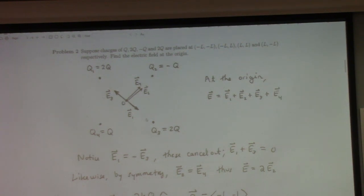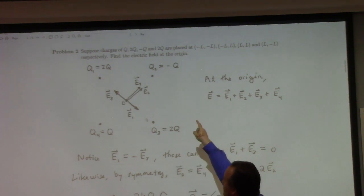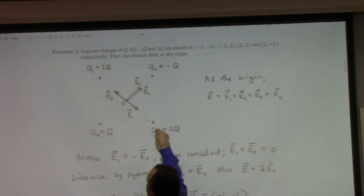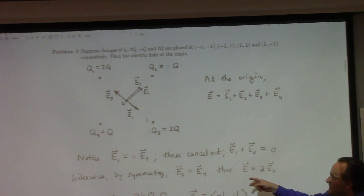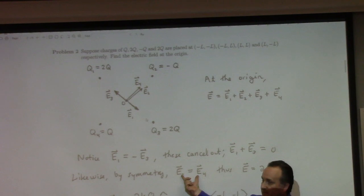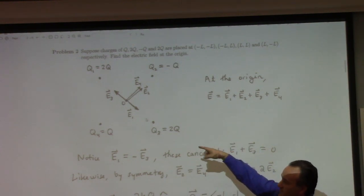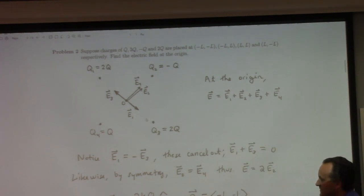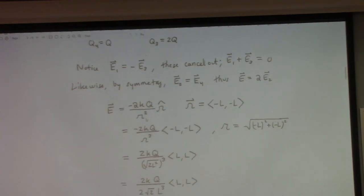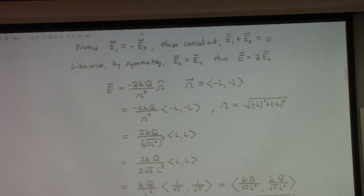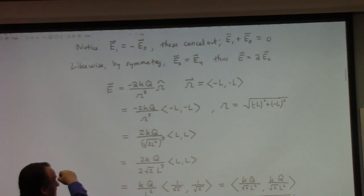I will post the answers on Canvas before too long. For this problem, we've got four charges. The electric field from charges one and three cancel out, so the net electric field comes from the second and fourth charges. By symmetry the magnitude and direction are the same for both. The distance from the center point to the side charges is actually the square root of two times L — not just L. The field points at 45 degrees, and the magnitude is KQ over L squared.